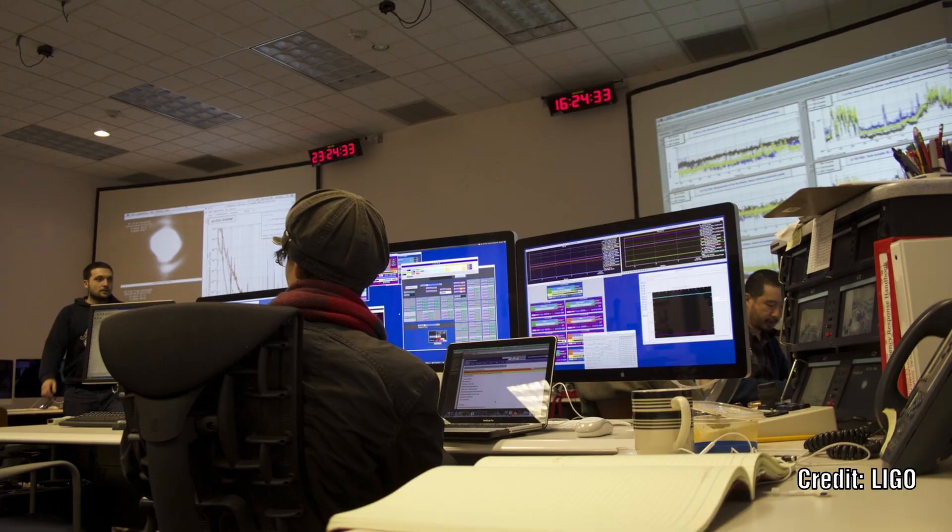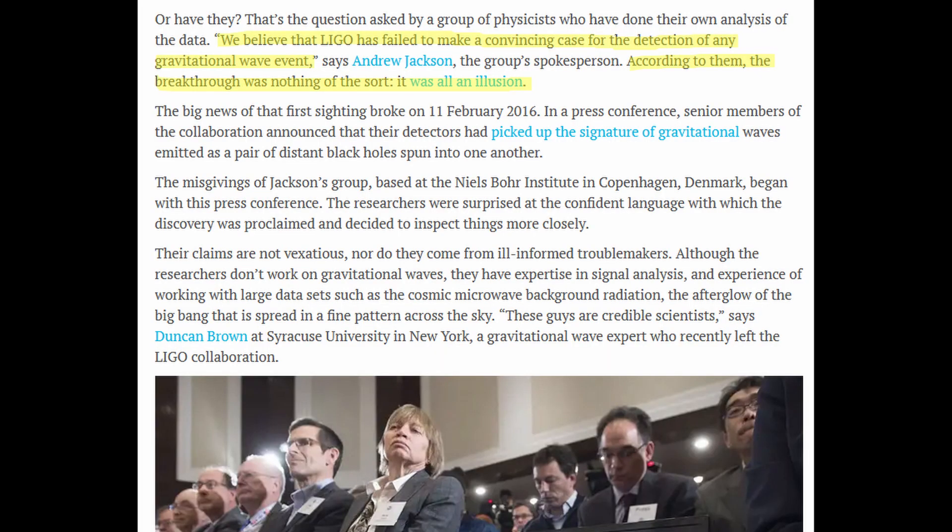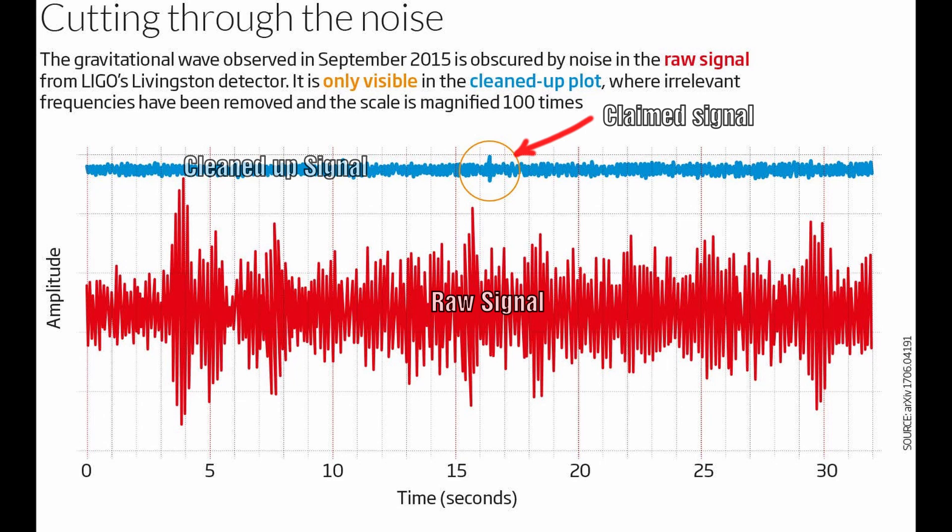In a report published last year, Danish scientists wrote up a report and published it in the Journal of Cosmology and Astroparticle Physics, questioning the validity of the LIGO findings. Now this was a peer reviewed paper. The scientists who produced this paper were initially very shocked by how confident the LIGO team were with their results. When they looked into the data and compared the raw signal to the cleaned up signal, they looked nothing alike.